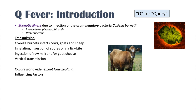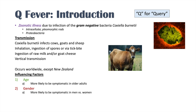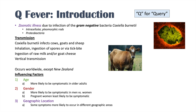Some of the influencing factors for the presentation of Q fever are as follows. Age is a big one — older adults are more likely to be symptomatic than younger adults, who may not even have symptoms. Gender can also influence the presentation: men are more likely to be symptomatic than women, and interestingly, pregnant women are least likely to be symptomatic. Geographic location also matters — in some areas hepatitis is more common, while in other parts of the world pneumonia is a more common clinical presentation.